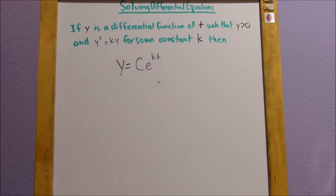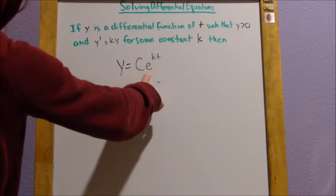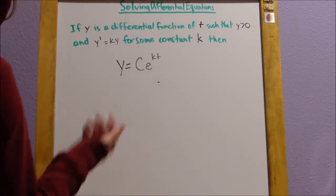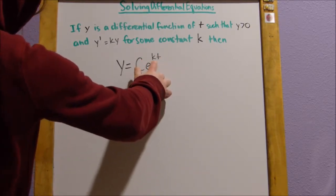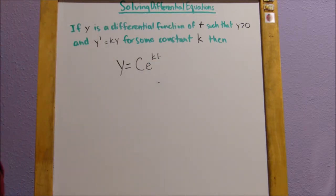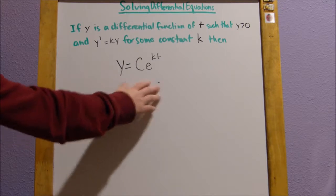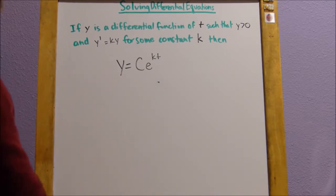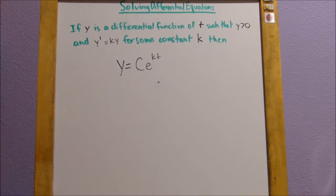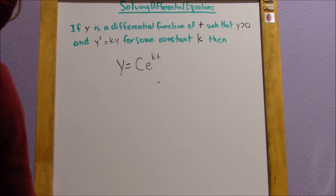Where c is an initial amount, e is just the number e, and k, when greater than 0, this equation should show growth, and when k is less than 0, it should show decay, and t is just time.